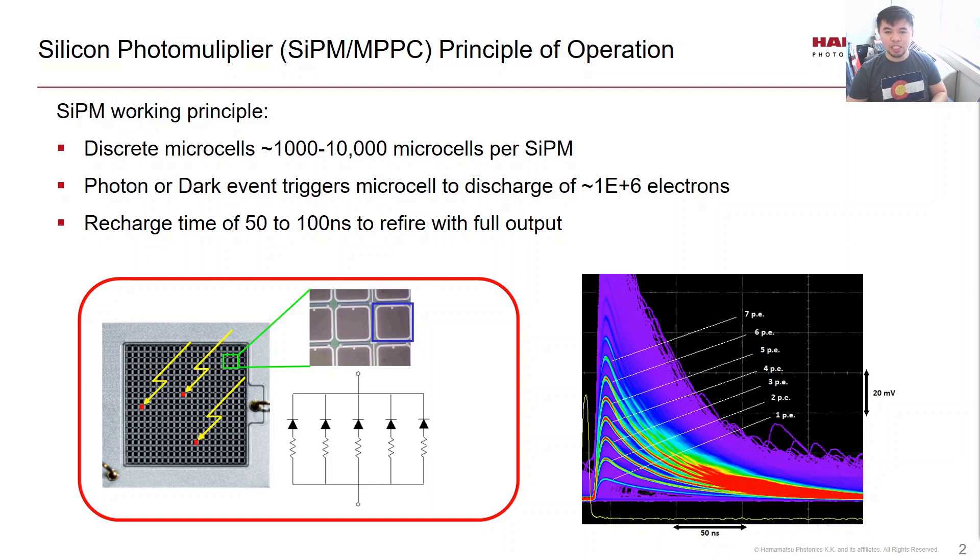A SIPM is a sensor that can detect individual photons. It's made up of microcells that each discharge millions of electrons when a photon is detected.